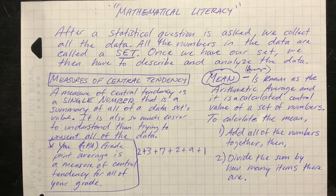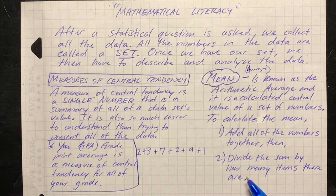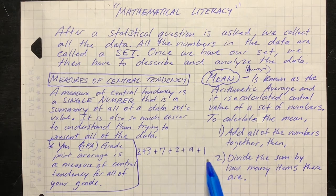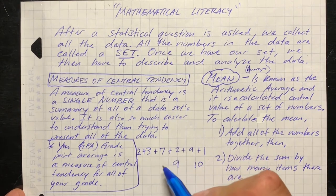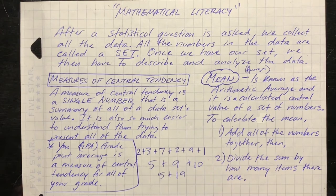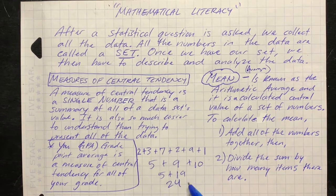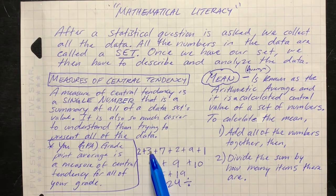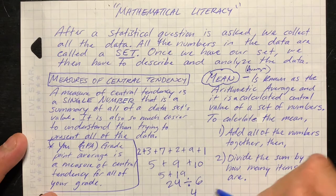Here's how you calculate the mean: you add all of the numbers together, then divide the entire sum by how many items there are. If we look at this data set — two plus three plus seven plus two plus nine plus one — nine plus one equals ten, seven plus two equals nine, two plus three equals five. Ten plus nine equals 19, and five plus 19 equals 24. So we have 24. We added all the numbers up. Now we divide that by how many items there are: one, two, three, four, five, six numbers.